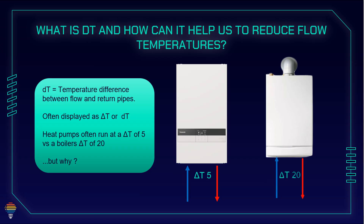In a condensing boiler, the delta T between flow and return temperature is 20 degrees. This is because of the technology — this technology operates on 20 degrees. Previously, old boilers were also around 15 to 20 degrees, as well as wood or pellet boilers.